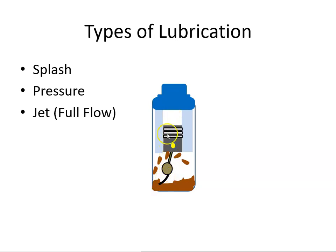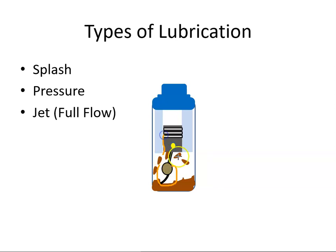As the piston goes up and down, the crankshaft rotates, and as it rotates the rod dipper comes along and scoops up the oil. As it comes back up again, that oil is splashed up and will hit the cylinder, the piston, and the conrod. The oil splashes up here to line the cylinder walls.